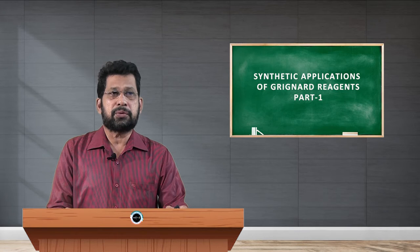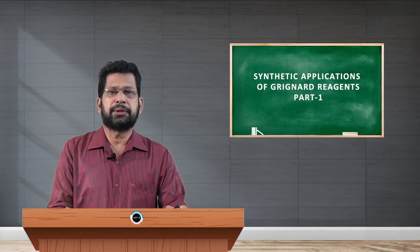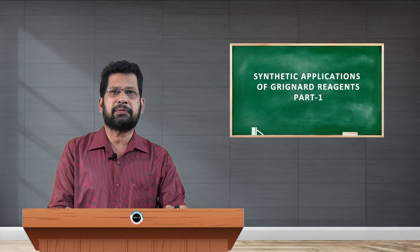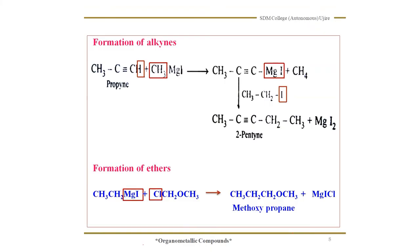Organometallic compounds — Grignard reagent is used in the synthesis of various classes of organic compounds. We have already studied how to synthesize alkanes and alkenes from Grignard reagent. Now let me explain another important hydrocarbon, that is the formation of alkynes, or preparation of alkyne starting from a Grignard reagent.